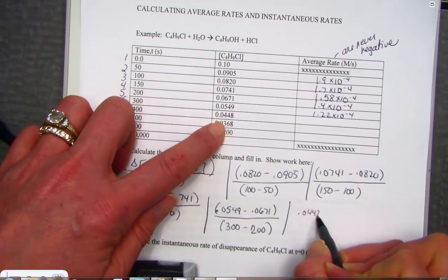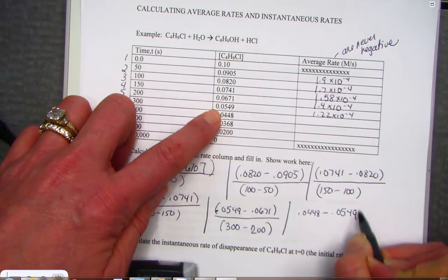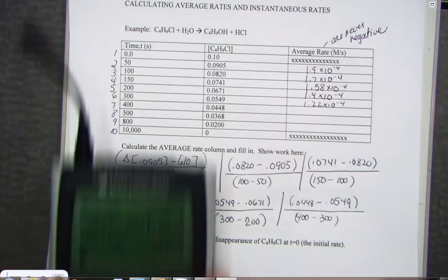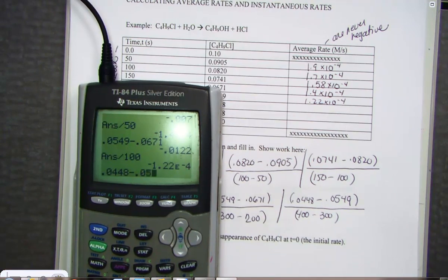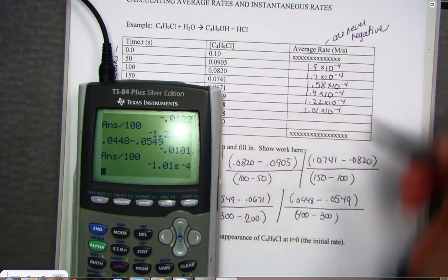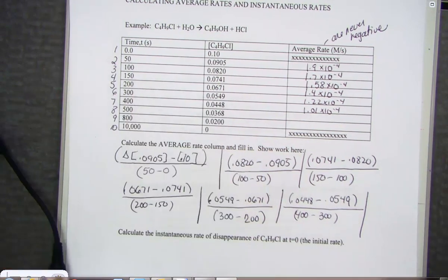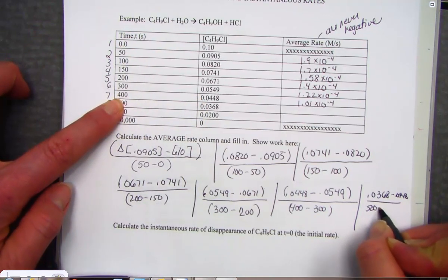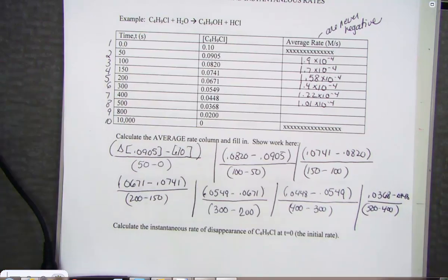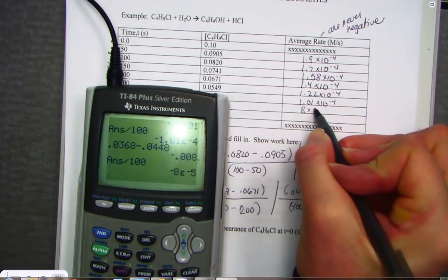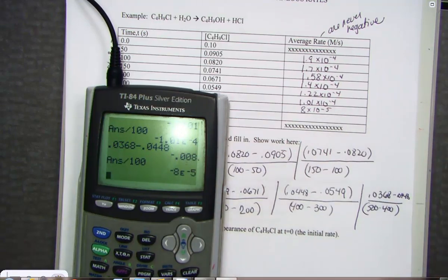Home stretch. Next line. 0.0448 minus the previous line 0.0549. There's your change in concentration. And again the time interval would be from 400 to 300 seconds. A difference of 100 seconds that went by. Hit it with me. Equal divide by 100. And we get 1.01 times 10 to the negative fourth molarity per second. Here's the next one. We have 0.0368 from 0.0448. That time interval is also 100 seconds. From 500 to 400. So 100 seconds had elapsed. 0.0368 minus the previous line of 0.0448. Now we have 8 times 10 to the negative fifth molarity per second. And one more my friends.